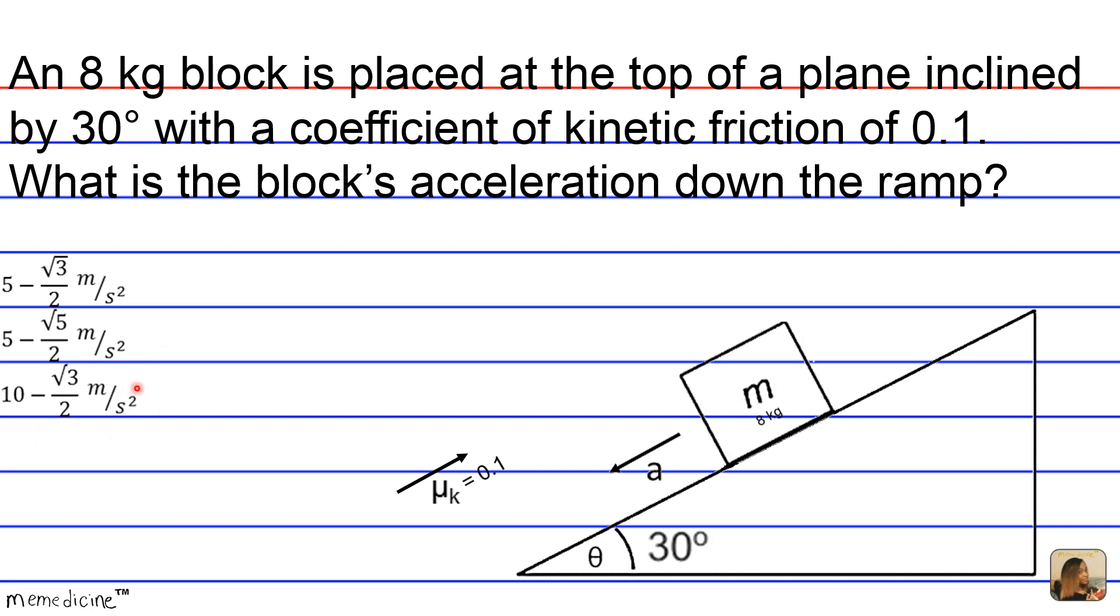Is it c, 10 minus radical 3 over 2 meters per second squared? Or is it d, 10 minus 5 over radical 2 meters per second squared?